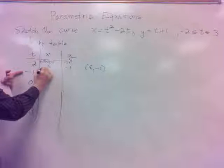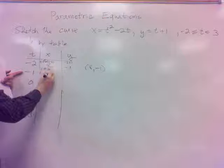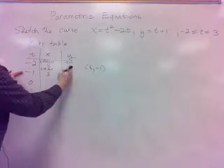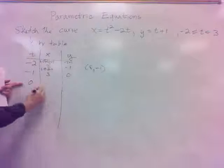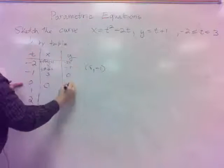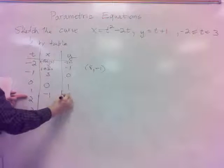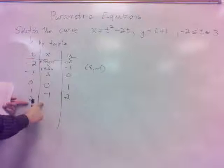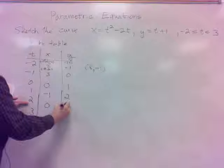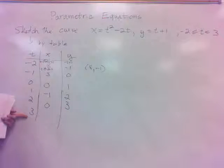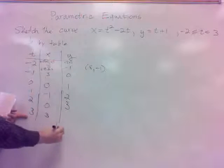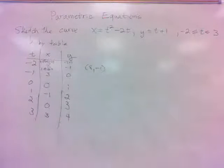If t is negative 1, we get negative 1 squared minus 2 times negative 1. That's 1 plus 2, that's 3. The y value would be negative 1 plus 1, that's 0. When t is 0, x is 0, y is 1. When t is 1, we get 1 minus 2 would be negative 1. 1 plus 1 would be 2 for y. When t is 2, we get 4 minus 4, that's 0, and 2 plus 1 is 3. When t is 3, we get 9 minus 6, that would be 3, and 3 plus 1 is 4.